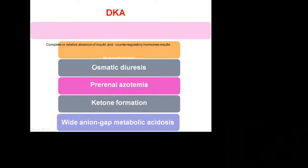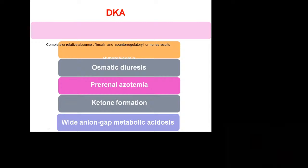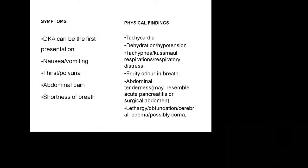This causes osmotic diuresis — the osmotic value of serum and blood rises because of the high blood sugar level, causing a profound diuresis. This is why diabetes is associated with polydipsia, polyphagia, and polyuria. Dehydration sets in, causing pre-renal azotemia. The ketone formation causes a wide anion gap metabolic acidosis.